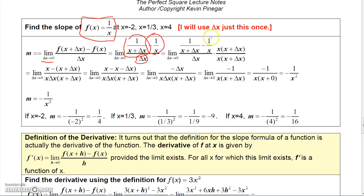What I'm going to have to do is eliminate the denominator from this top part. The common denominator is x times x plus delta x. If you multiply the first fraction by x plus delta x, the x plus delta x cancels, and you just get x. If you multiply the second term, 1 over x, by this, the x's cancel, and you get minus the quantity x plus delta x. On the bottom, you just get delta x times x times x plus delta x.